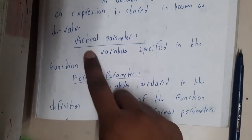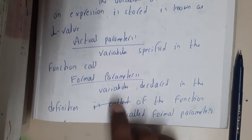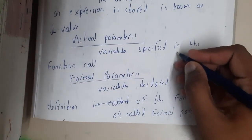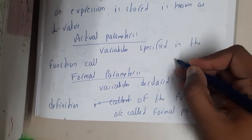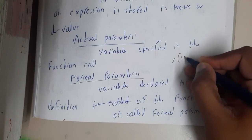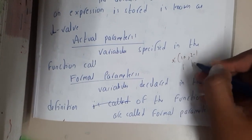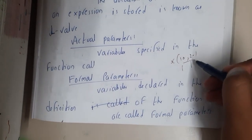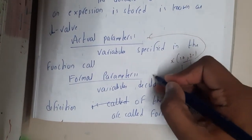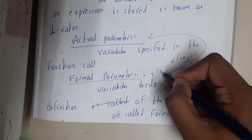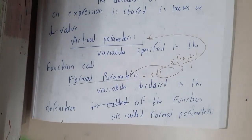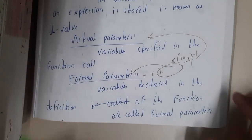The main two concepts are actual parameter and formal parameter. The actual parameter is the parameter in which you specify the value where you are calling it. For example, if there is a function f called with two values — f(10, 20) — those are the actual parameters. Inside the function, void function(int x, int y), the int x and int y are called formal parameters.